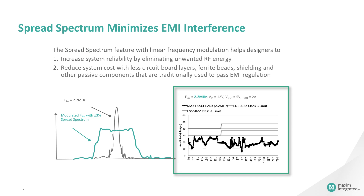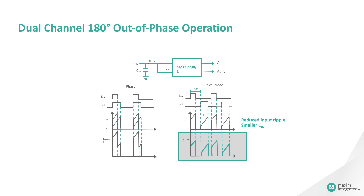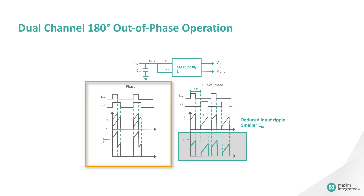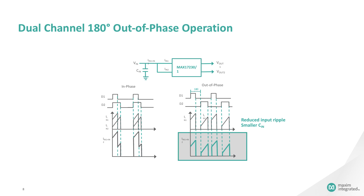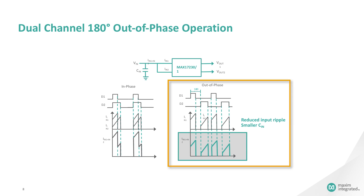Out-of-phase operation reduces the stress on the input capacitor. In the in-phase operation, the amount of input current required is high, which results in larger ripples and much more capacitance value is required to reduce the ripple. On the other hand, in out-of-phase operation, clocks are 180 degrees out-of-phase, and both phases don't turn on at the same time. The input capacitor needs to have only sufficient capacitance to cope with the larger current between the two phases, thus lowering ripple.